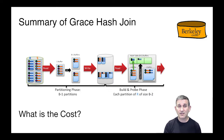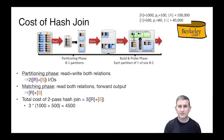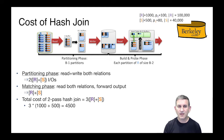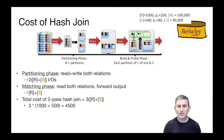Let's analyze the cost of that. With our relations and their sizes listed in the upper right, the partitioning phase reads and writes both relations, so that's two times (|R| + |S|) IOs. In the matching phase we read both relations, so that's another |R| + |S|. The total cost of a two-pass hash join assuming no recursive partitioning is 3|R| + |S|, or in this case three times 1,000 plus 500, which is 4,500 IOs.